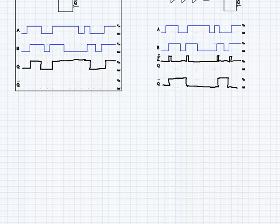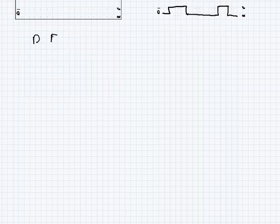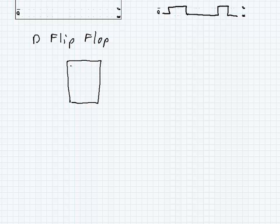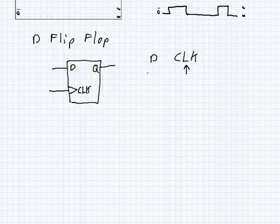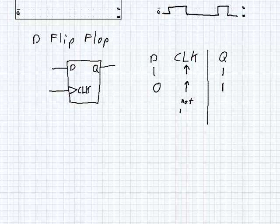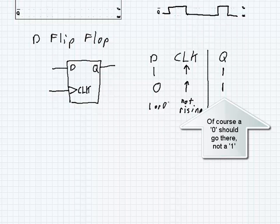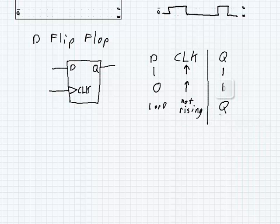The D-latch with the triple-inverted signal on the enable leads to the D flip-flop, and we can create a new circuit block for it. It has a D-input and a clock input — it's a special type of enable called the clock — and it's only on the rising edge of the clock that D gets mapped to Q. The truth table: on the rising edge of the clock, if D is 1, Q becomes 1; if D is 0, Q becomes 0. If it's not a rising edge — falling or not changing — Q keeps its current value.